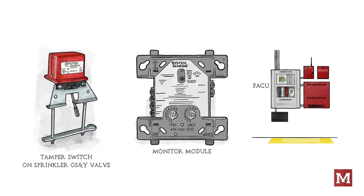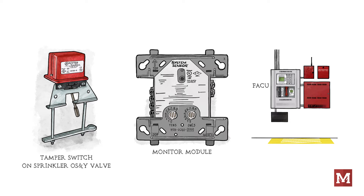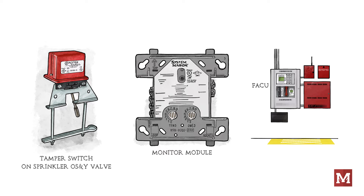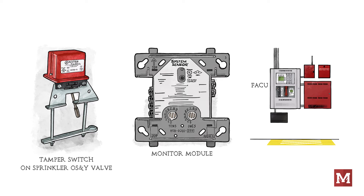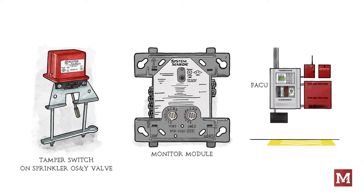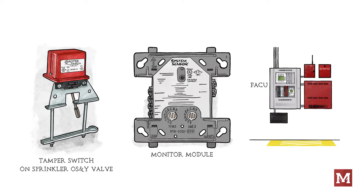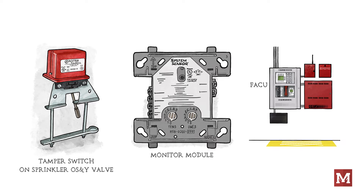The monitor module also checks for integrity — it supervises the continuity of the wiring. If there's a problem with the wiring or the tamper switch circuit, the monitor module will detect it and send an alert to the fire alarm control panel saying that something is compromised. The monitor module helps keep the sprinkler system active by alerting someone if the system is out of service. So a monitor module, sometimes called an input monitor module, is a device that hardwires to something else and monitors for a change in state, then transmits a signal back to the fire alarm control unit.